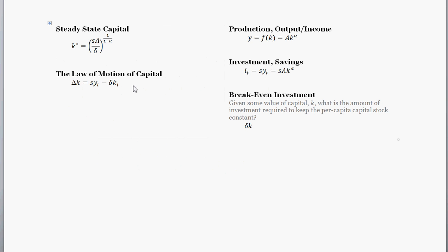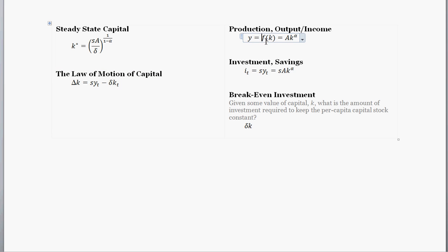Let's review the model. We found the steady state value of capital K star. The steady state value of capital per worker is defined by this. Our law of motion equation shows how capital changes through time. Our production function is F of K equal to total factor productivity times the capital per worker raised to the alpha. Our investment or savings equation: I sub T is equal to the savings rate times output per worker. And we're going to introduce a new concept here — breakeven investment.